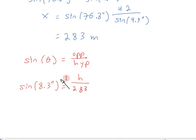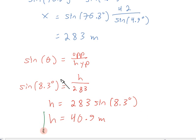and I'll get h is equal to 283 sine of 8.3 degrees. 8.3 degrees is not a major angle on the unit circle. I'll have to use my calculator in degree mode, and when I plug that into my calculator, I find that h is 40.9 meters to three significant figures. And that completes my solution.